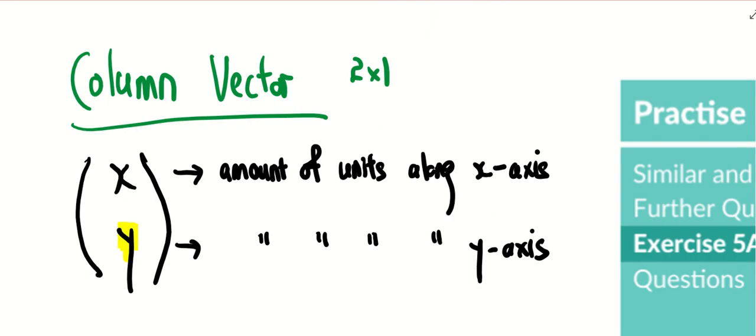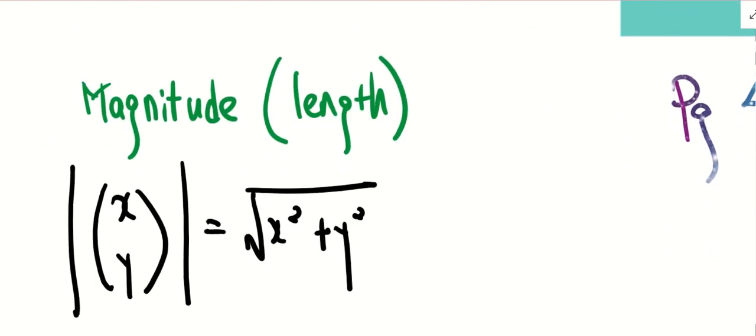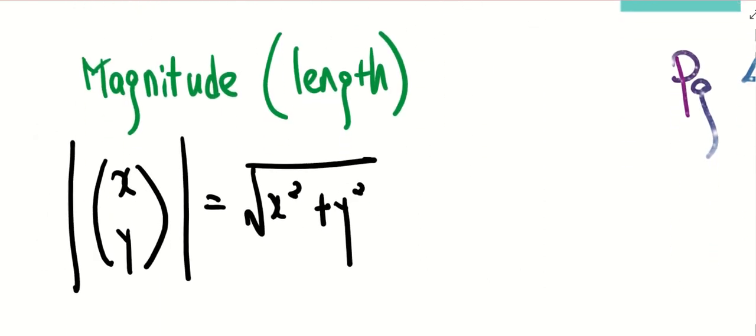Now that you know how to write the column vector, you know about the direction. The next thing is about the magnitude. With the use of Pythagoras theorem, there are two ways we can represent magnitude. One way is by the word magnitude, the other way is by this two-line symbol. I'm going to make use of it. And by Pythagoras theorem, this will be the formula.